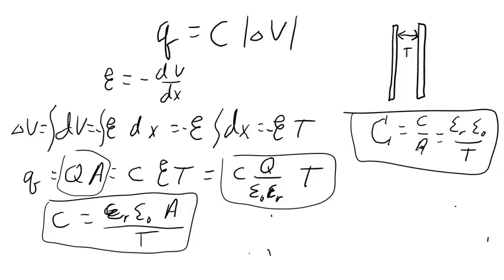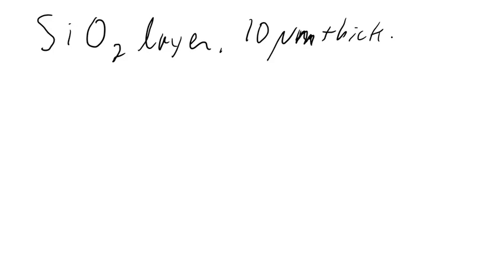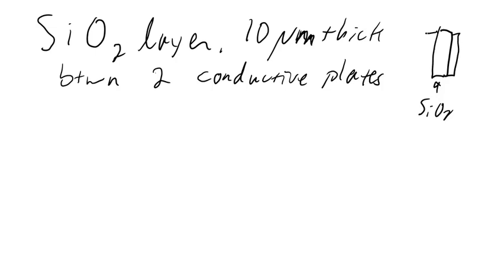So, for example, I have a silicon dioxide layer, 10 microns thick, sandwiched between two conductive or semi-conductive plates. Let me just draw you a picture. I've got my silicon dioxide, and I've got my conductor and my conductor. And that looks like a capacitor. And so let me ask, what is the capacitance per unit area of that setup?